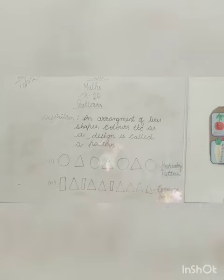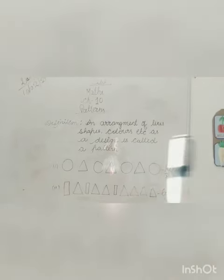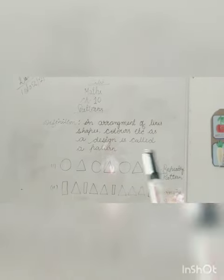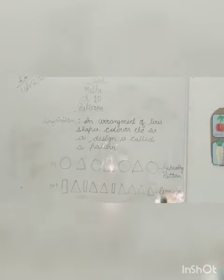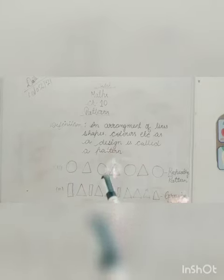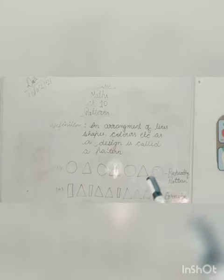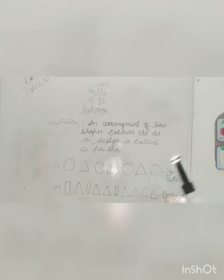Pattern jo ra hai wo repeat ho ra hai. You can see if we do color on the circle and triangle, so it will call the colors pattern. If the color of circle is pink then red then pink then red then pink then red then pink, so it is called the repeating pattern.